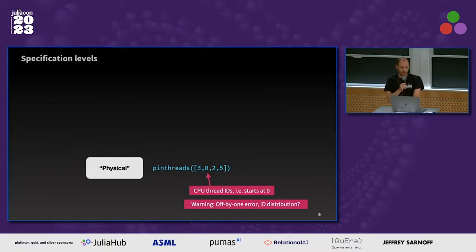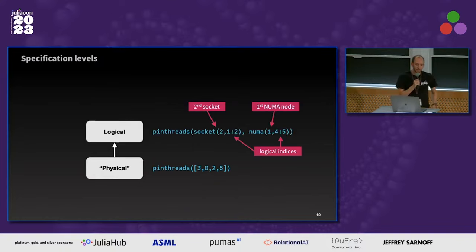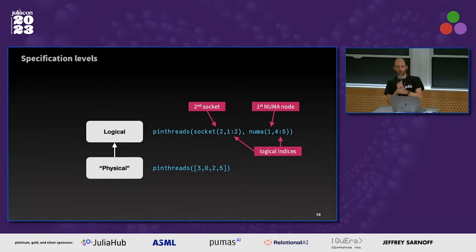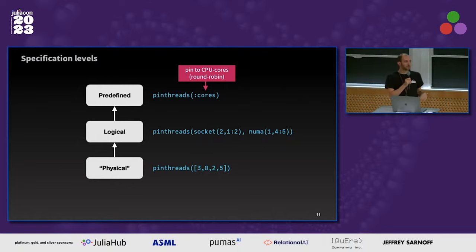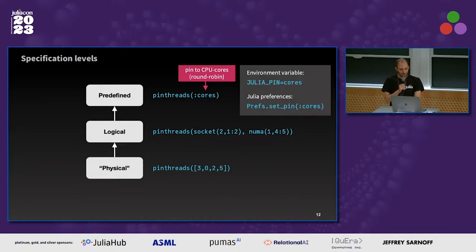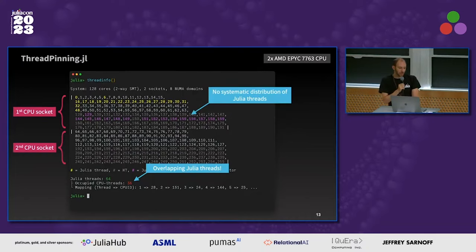How can you use ThreadPinning.jl to pin your threads? There are three different levels. The first is the physical level where you just specify the core IDs to pin to. The second is the logical level, where you can specify in a logical way — for example, two threads on the first two cores on the second socket, then cores four to five on the first NUMA domain. It's an arbitrary example but gives you a logical abstraction for pinning threads. And lastly, there are predefined options which are good in most cases — just say pin to cores, pin to NUMA domains, or whatever. There are also environment variables and Julia preference options available.